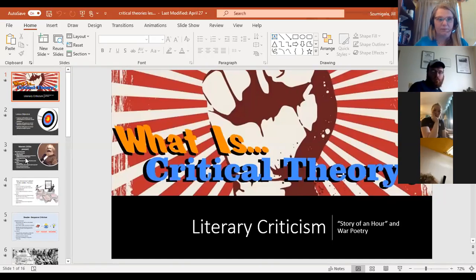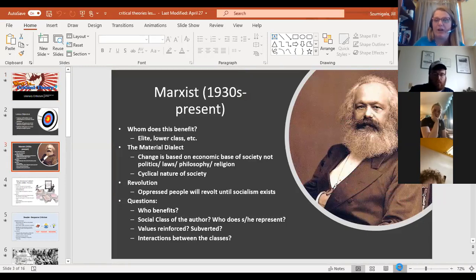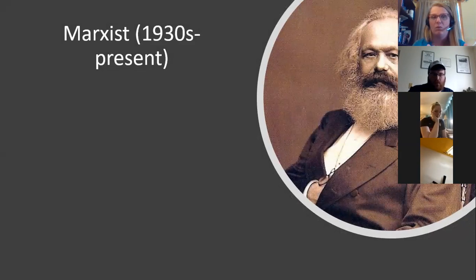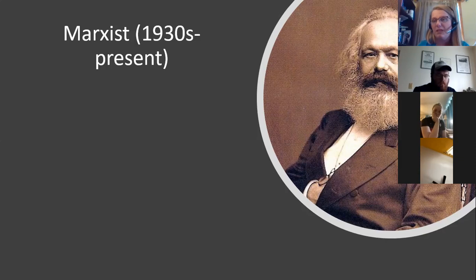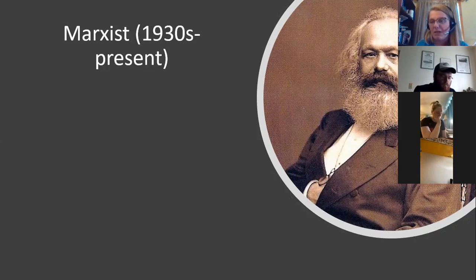I'm going to put us in sharing mode. I want to remind ourselves about the Marxist theory, so let's start there. We're going to read the story, look through the Marxist theory to remind ourselves of what it was — we kind of went through that last week — and then we're going to read 'Story of an Hour' together and work on filling out that first box on the sheet.